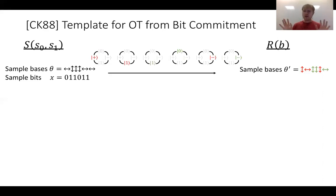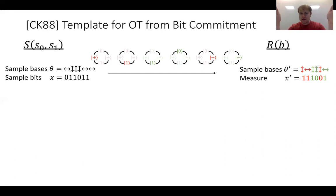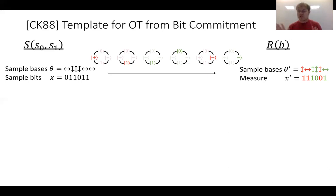The receiver doesn't know what these states are. It samples its own random sequence of bases and measures these qubits in its own bases θ'. Roughly half the time it guesses the right basis, half the time the wrong basis. In positions where it guessed wrong, the X' it obtains are uniformly random bits. In positions it guessed right, the values match those the sender sampled. This establishes a channel where the sender sends classical information via quantum states, and the receiver obtains a random subset — some information gets erased by the receiver's measurements. The sender doesn't know what the receiver got correctly or incorrectly.